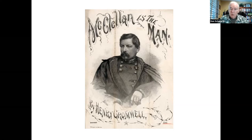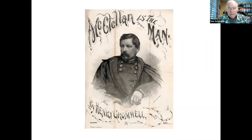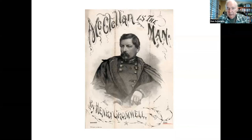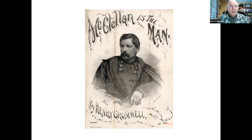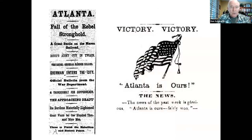Less than three months before the election, Lincoln seemed to have lost all hope. He wrote in a private memorandum: 'It seems exceedingly probable that this administration will not be reelected.' He confided: 'You think I don't know I'm going to be beaten? But I do. And unless some great change takes place, I will be beaten badly.' Then at the darkest moment, on September 3rd, 1864 — two months before the election — Lincoln received a telegram from General Sherman announcing: 'Atlanta is ours and fairly won.' The Union victory in Atlanta, an important railroad and manufacturing city, was one of the most important military accomplishments of the war and really was the turning point.